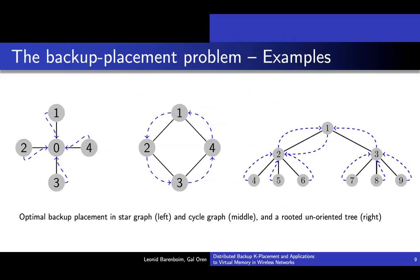Let's take a look at some basic examples. In the middle, you can see a cycle graph. The optimal backup placement solution would be if each node selects its succeeding neighbor to be its backup node, giving a maximum backup burden of only one unit — a good result. On the left, a star graph forces all nodes to choose the center node, resulting in a maximum backup burden of size V minus one — a less good result. On the right, a rooted unoriented tree forces all nodes to choose their parents, besides the root, giving a maximum load of delta.